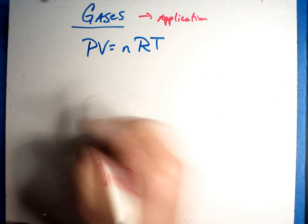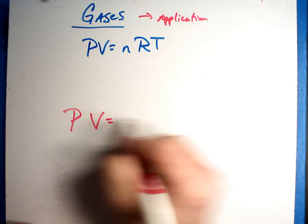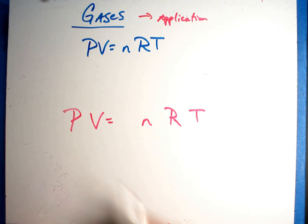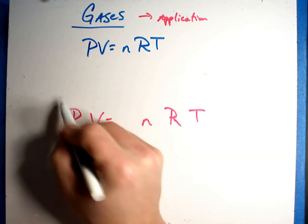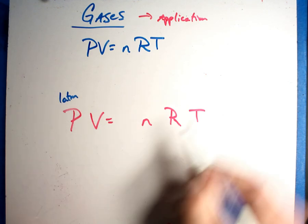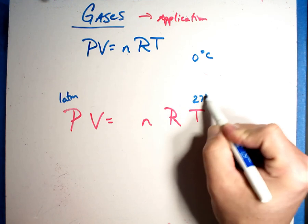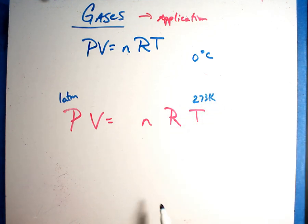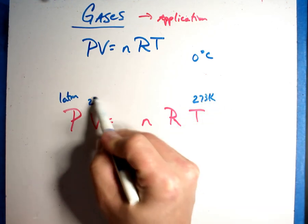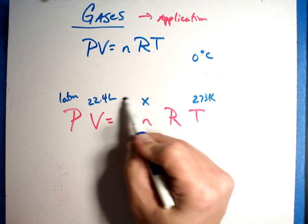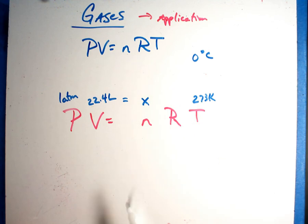Let's take PV equals nRT. Let's say that you had a gas at 1 atmosphere and a temperature of 0 degrees Celsius, 273 Kelvin, and you had 22.4 liters. Let's say you want to know how many moles that is, and you're going to work the problem.